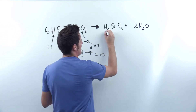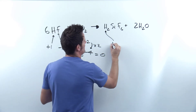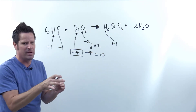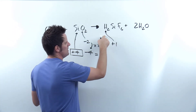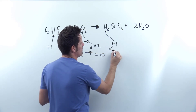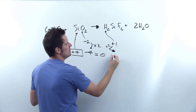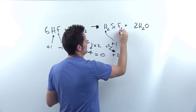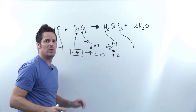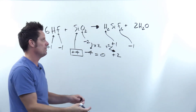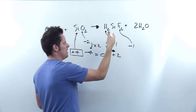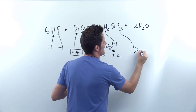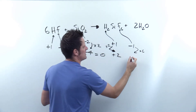Now let's do the same process for the right side. The hydrogens are again +1 when bonded to non-metals — silicon is actually a metalloid, but let's keep things simple. With two hydrogens each at +1, their total charge is +2. Silicon is the mystery here with no hard rule, but fluorine is always -1 except in F₂. There are six fluorines, so their total charge is -1 times six, which is -6.